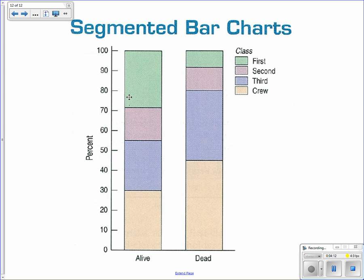Finally, a segmented bar chart where you're segmented according to one variable. In this case, they're doing alive and dead. And then they're segmenting that according to the percentages that are in each category vertically.